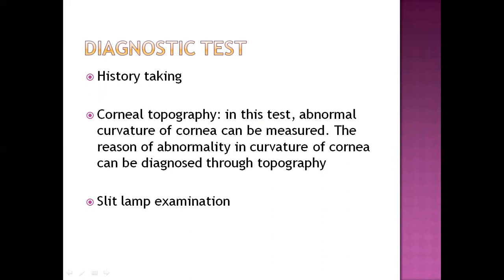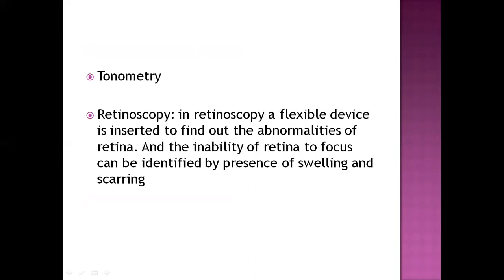Slit lamp examination has already been explained in a separate diagnostic test video. In slit lamp examination, we visualize each and every part of the eye microscopically. Tonometry is used to measure the pressure of fluid inside the eye. Retinoscopy is a flexible device that can find out abnormalities of other parts of the eye as well as the retina, and the inability of the retina to focus can be identified by the presence of swelling and scarring.